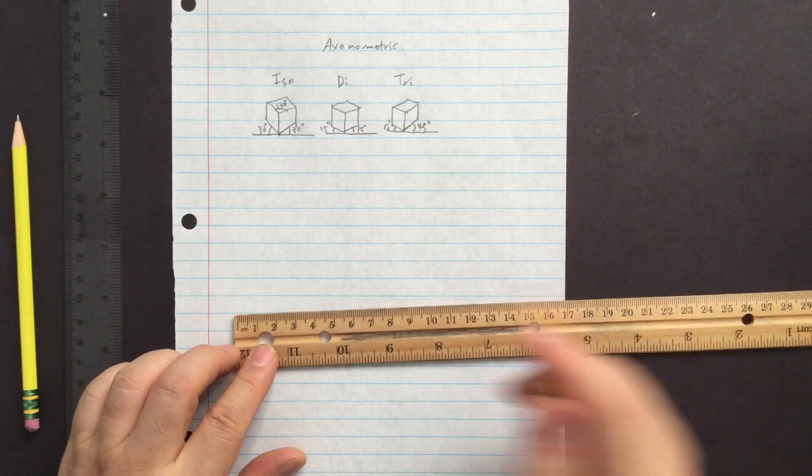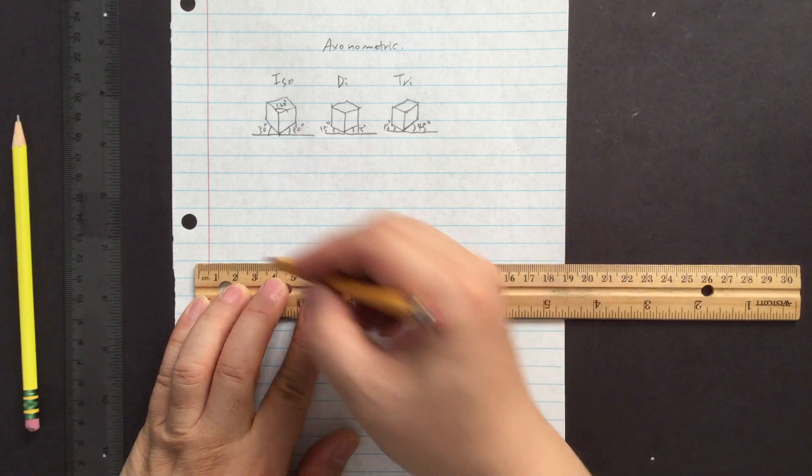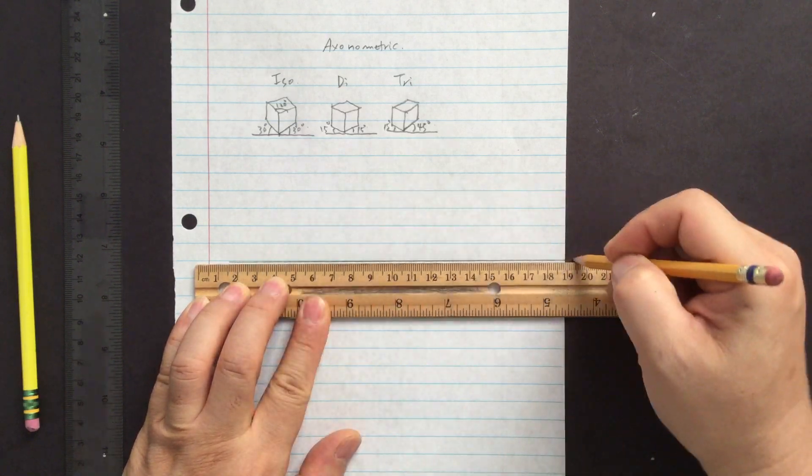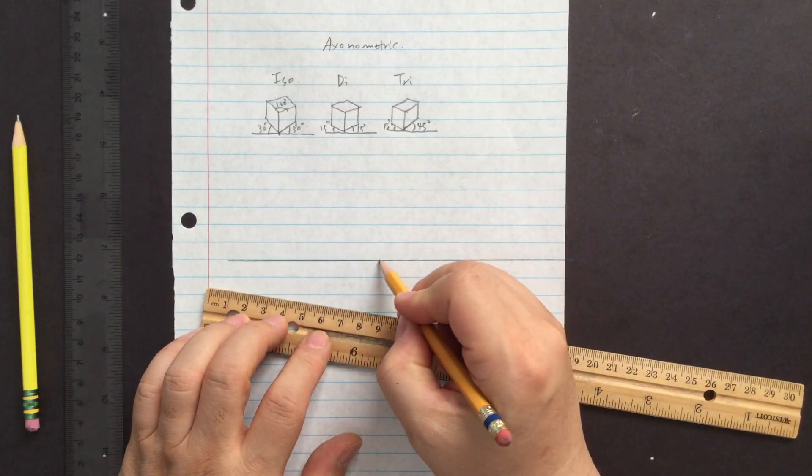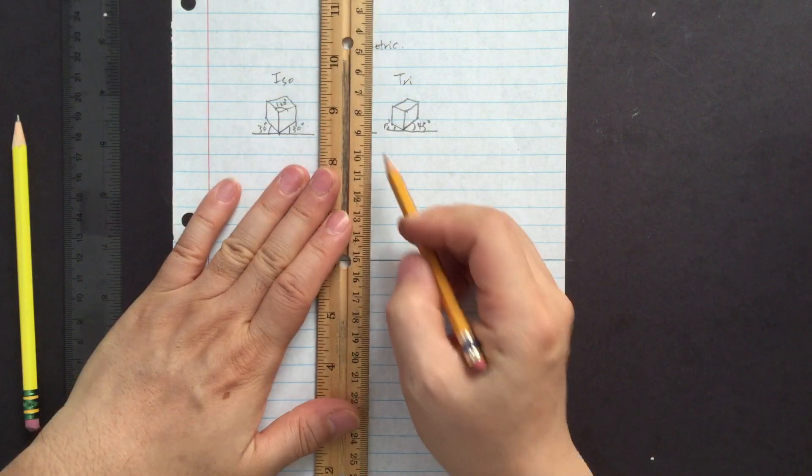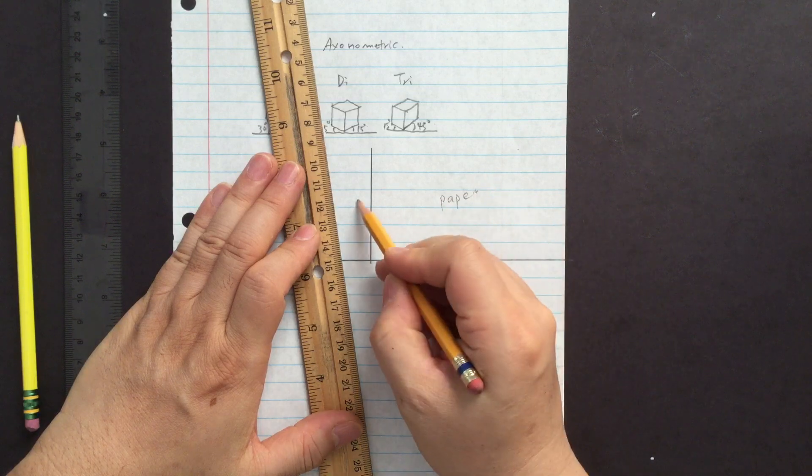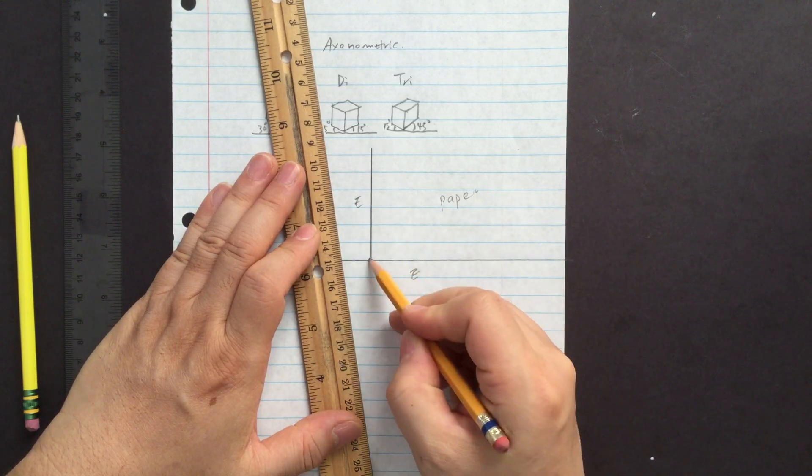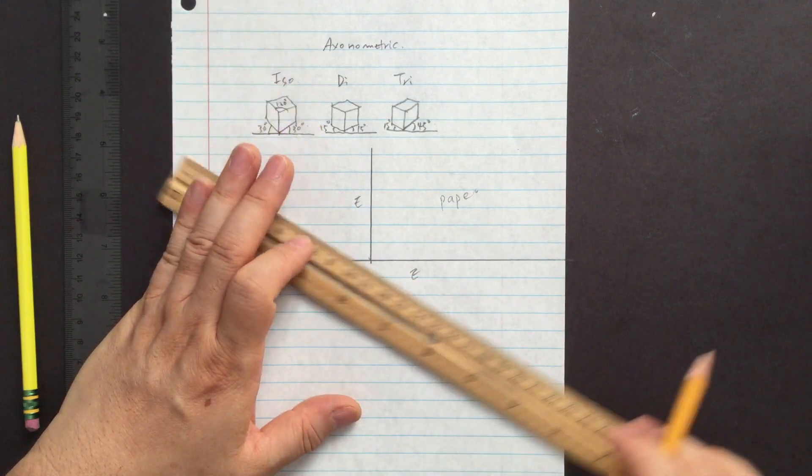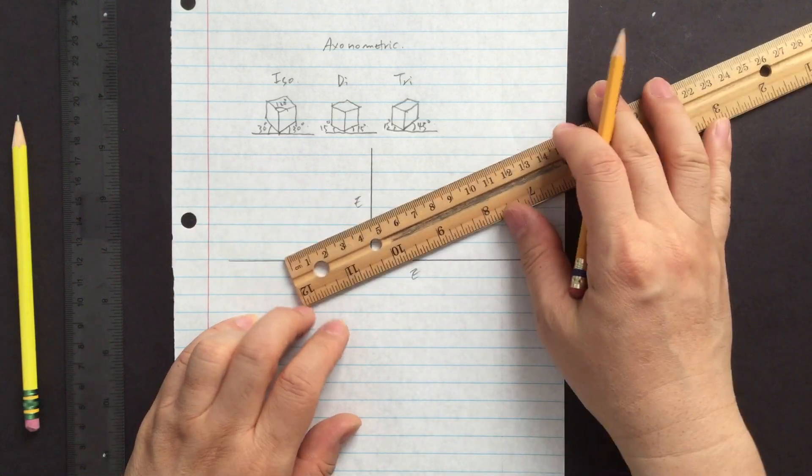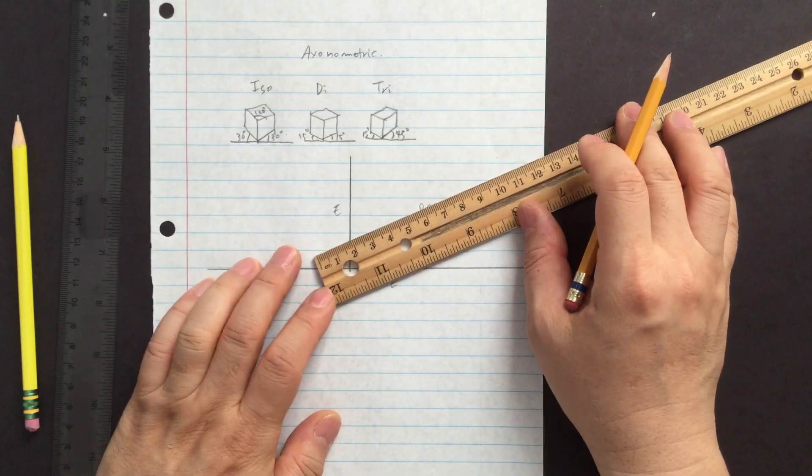So what you can do is, let's say that this is the edge of the paper. And what you can do is, let's say this is a paper. And this is the edge. And that's the corner. So what you can do is, if you have a hole, it's going to be helpful.